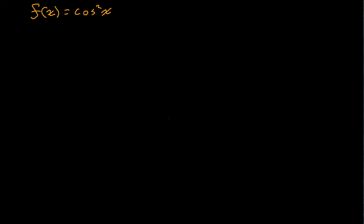What we're trying to find is the antiderivative capital F of x, which is going to be equal to the indefinite integral of the function cosine squared of x with respect to x, times dx. How can we solve this? Because we are not familiar with cosine squared of x in terms of a derivative, but we are familiar with some trigonometric identities that might make this a little bit more obvious.